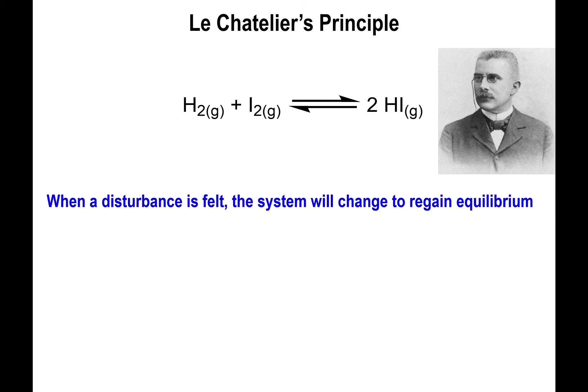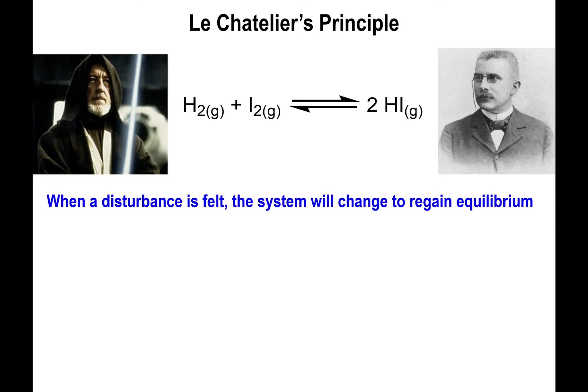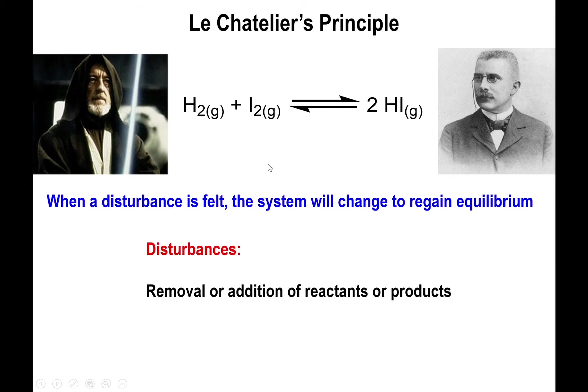There are a few ways in which this can happen. You can add a disturbance or stress to your reaction to change it from being at equilibrium to a non-equilibrium state. The disturbances could be in the form of removing or adding reactants or products, which changes the value of your expression relative to K. You could also change the volume, pressure, or temperature. Volume and pressure specifically apply to gases, while temperature applies to gases or aqueous substances as well.